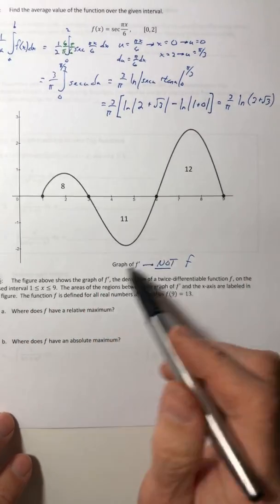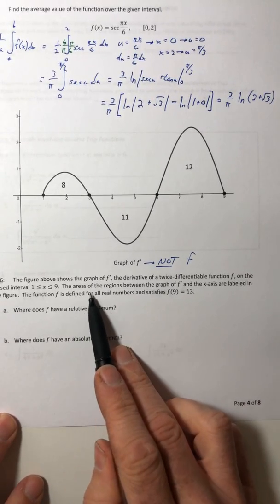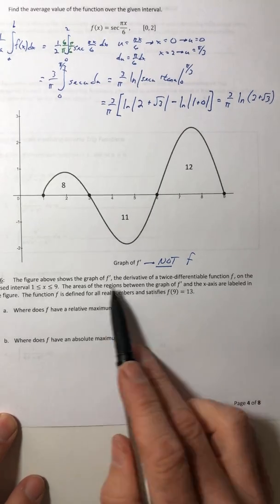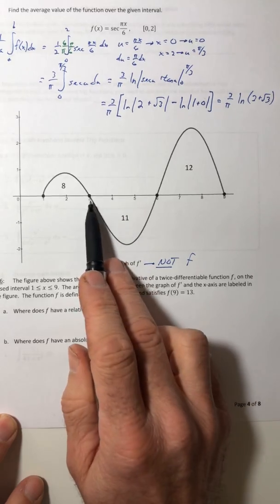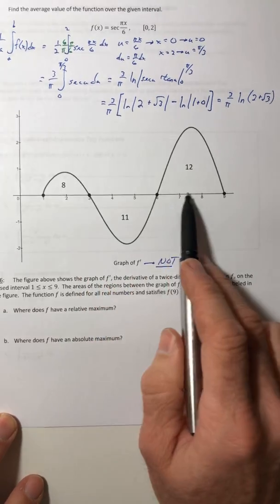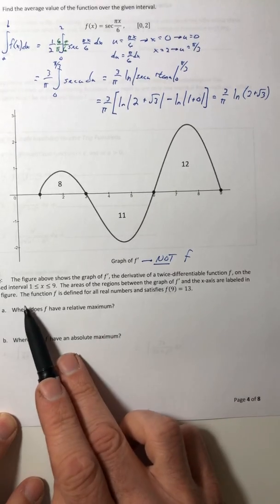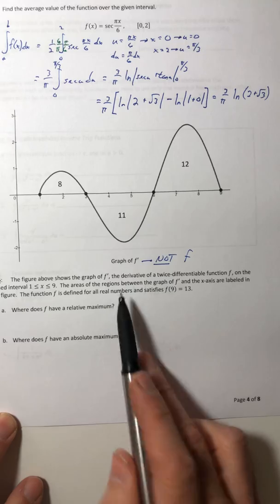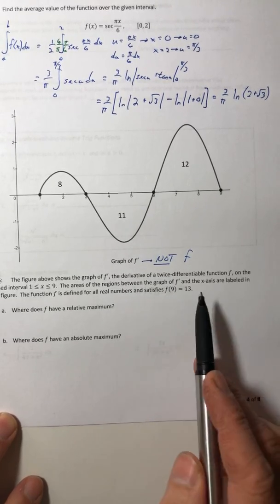You don't have enough information to do it. The areas of the regions between the graph of the derivative and the x-axis are labeled in the figure. So from 1 to 3 that area is 8, 3 to 6 that area is 11, and 6 to 9 that area is 12. The function f is defined for all real numbers and satisfies f of 9 equals 13.